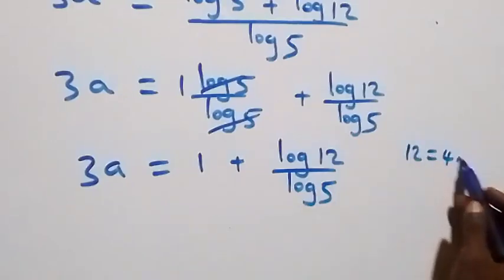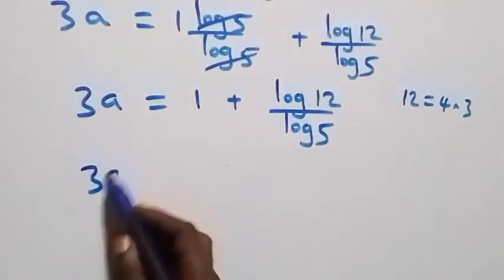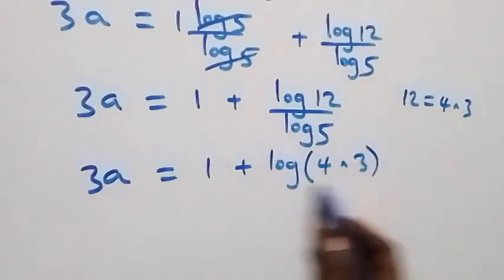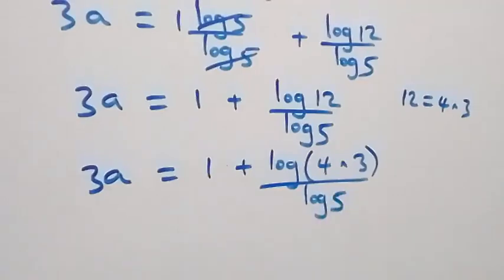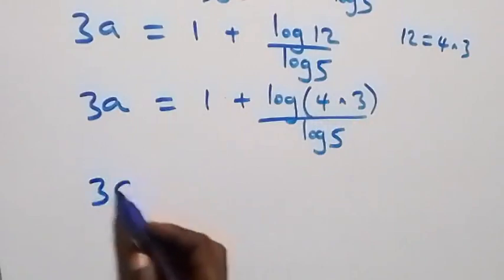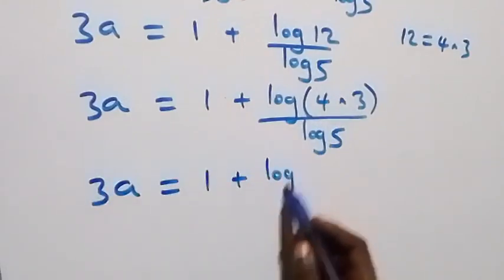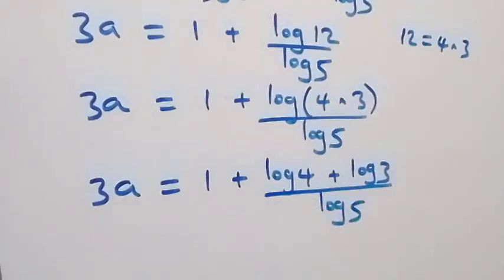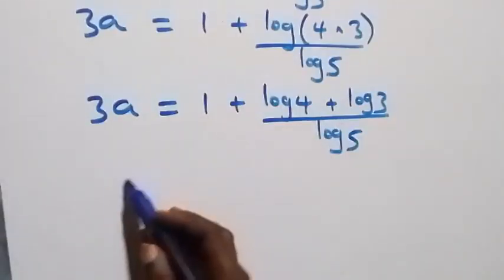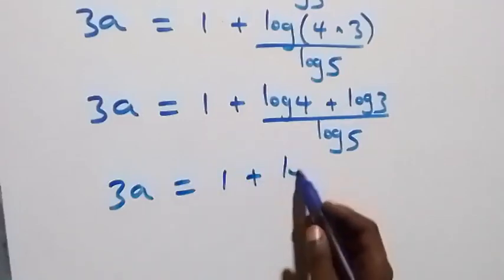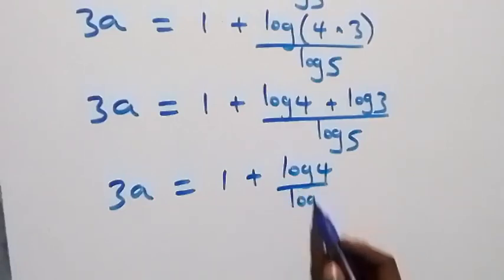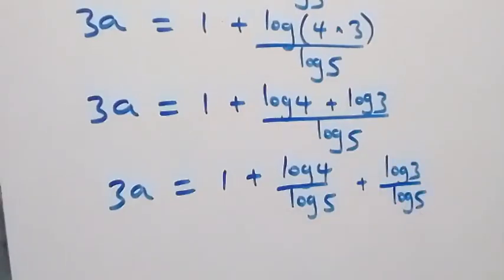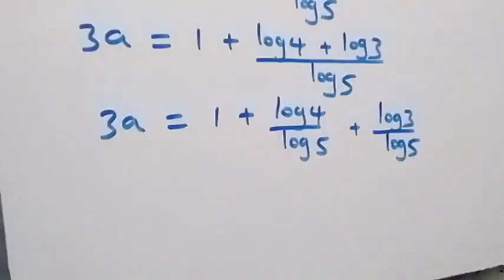This implies 3a equals 1 plus log 12 over log 5. Now let's write 12 as 4 times 3. So we have 3a equals 1 plus log of 4 times 3, over log 5. We separate this into two fractions: 3a equals 1 plus log 4 over log 5, plus log 3 over log 5.